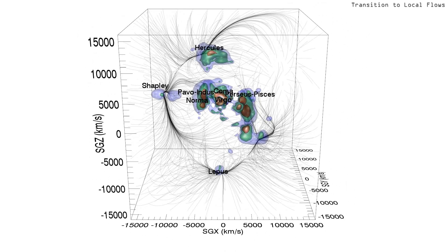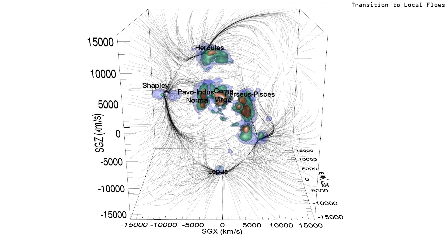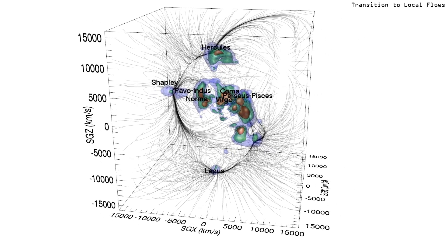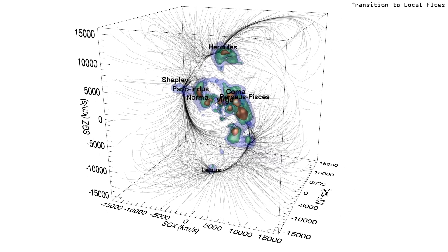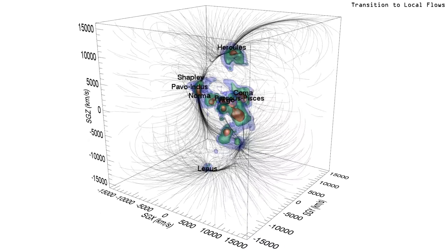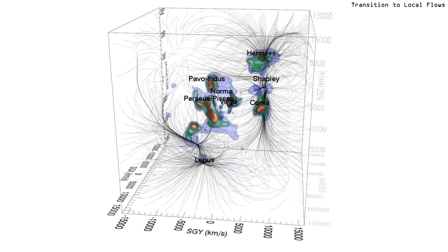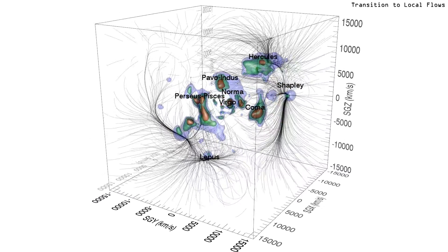Local components of velocity flows begin to be distinguished. Hercules separates from Shapley and Perseus-Pisces separates from Lepus.